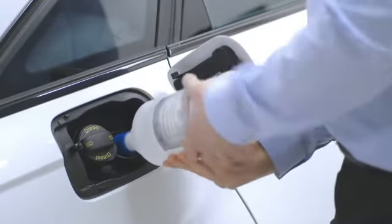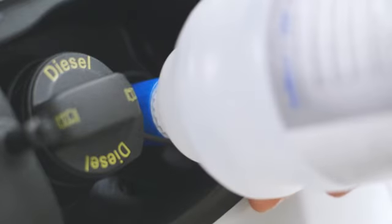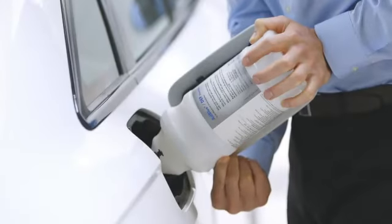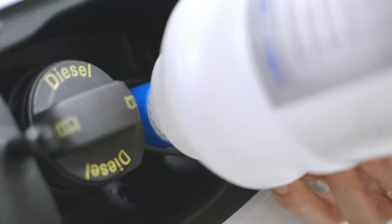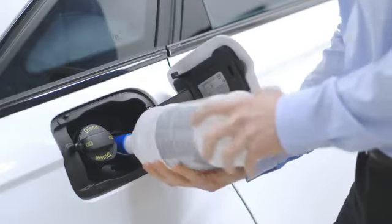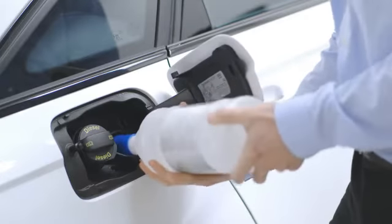Simply screw the bottle onto the AdBlue valve and push down to release the fluid. Once the bottle is empty, release it, which closes the valve. You can then unscrew the bottle and remove it.